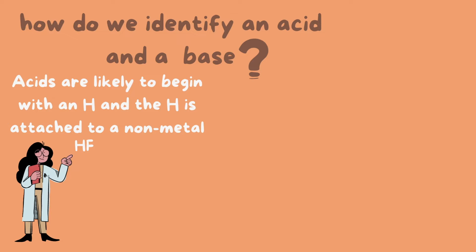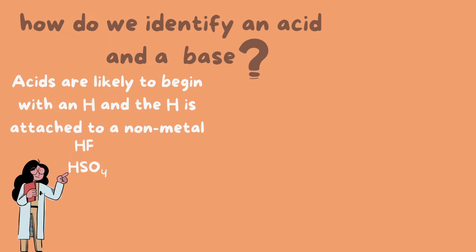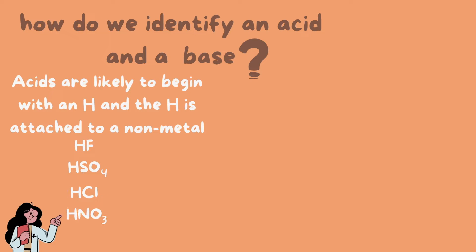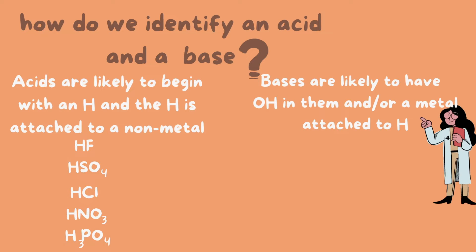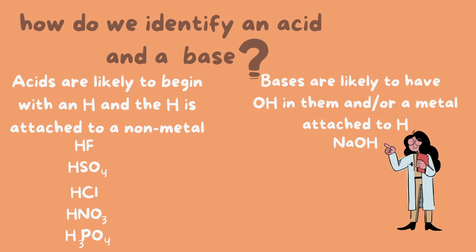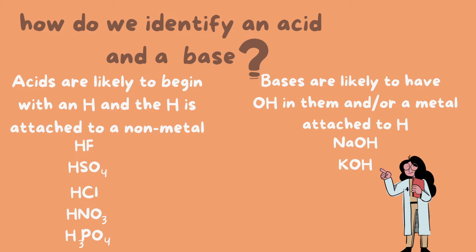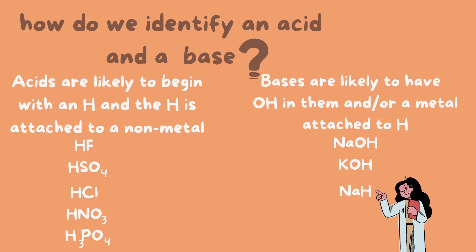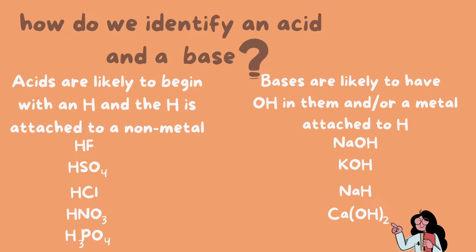For example, hydrofluoric acid, hydrogen sulfate, hydrogen chloride, nitric acid, and phosphoric acid. Bases are likely to have OH in them and/or a metal attached to a hydrogen. For example, sodium hydroxide, potassium hydroxide, and sodium hydride. Notice that sodium hydride does not have OH in it, but it does have a metal attached to a hydrogen — and that's what makes it a base. Calcium hydroxide and strontium hydroxide are other examples.